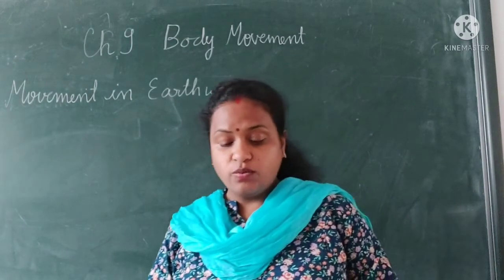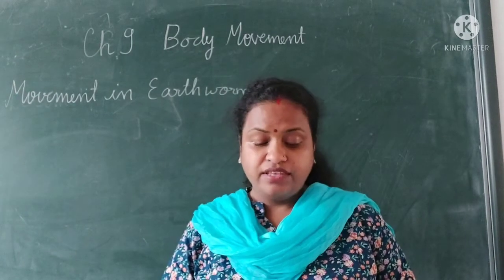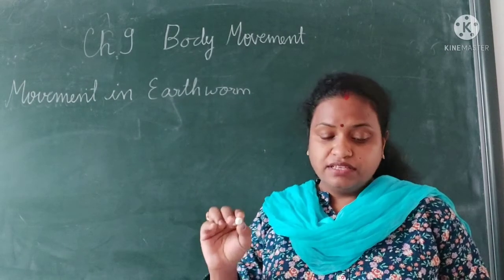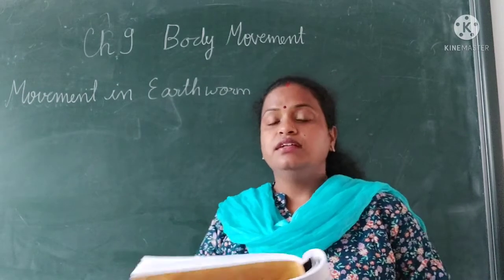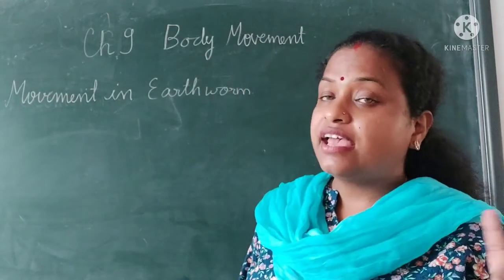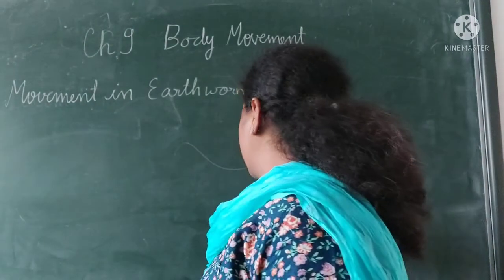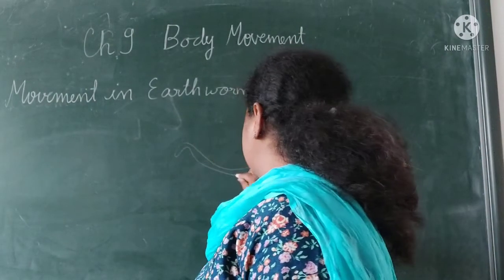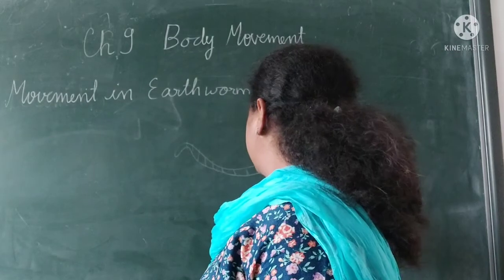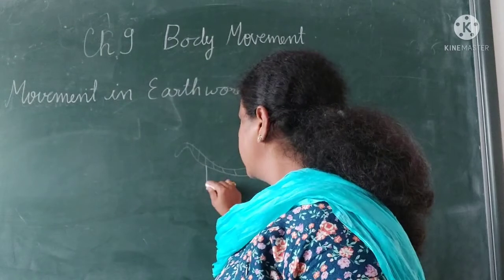While moving, the earthworm fixes one end of its body to the surface and expands its body muscles, which carries the other end of the body forward. If you see the earthworm, it moves with the help of contraction and expansion. It has small bristles and these bristles are called setae, or chaetae.